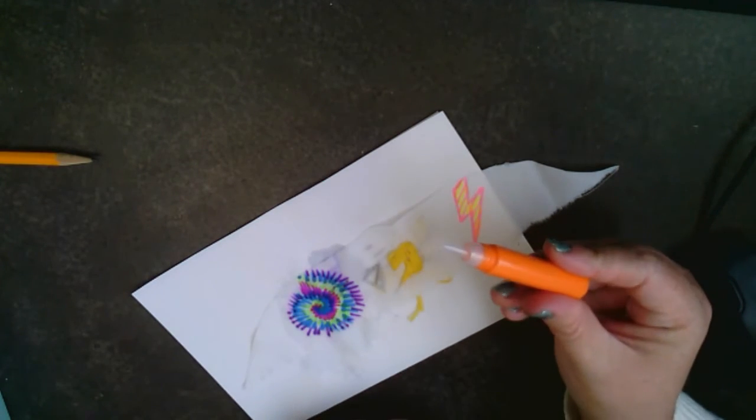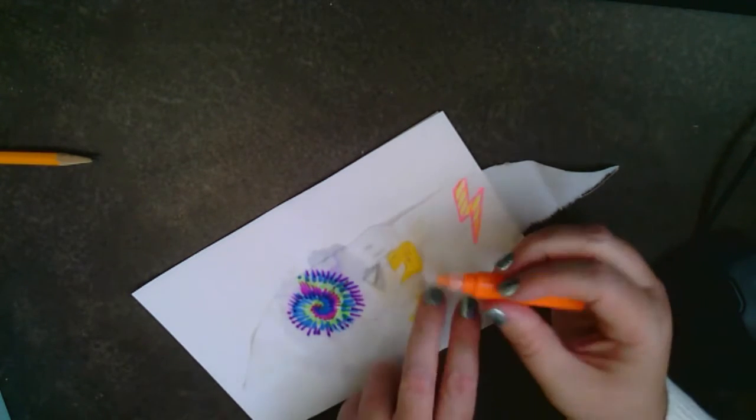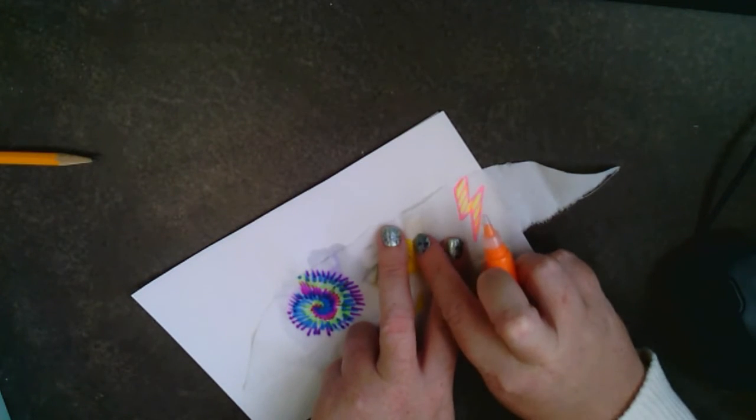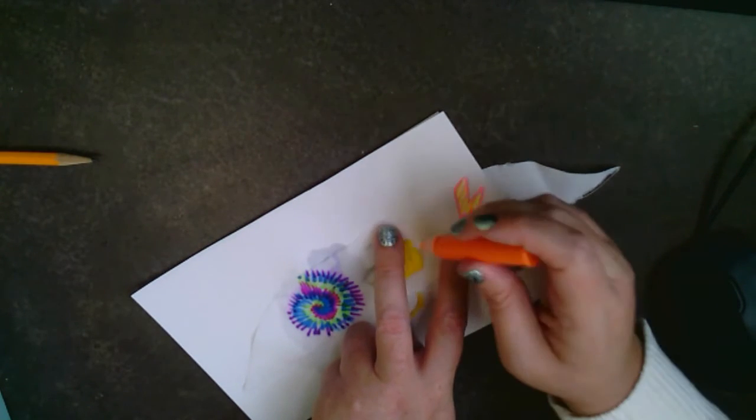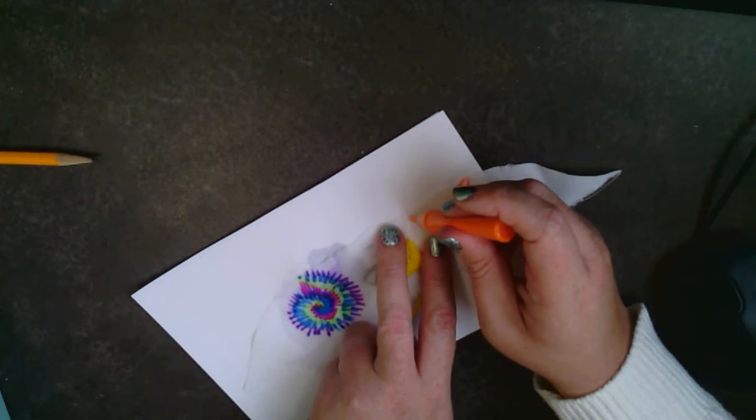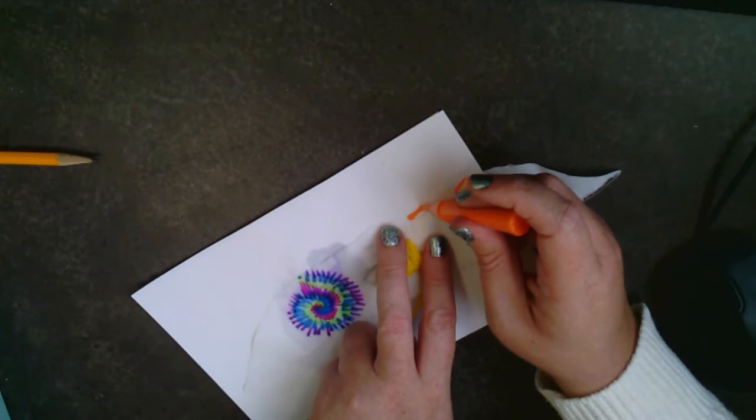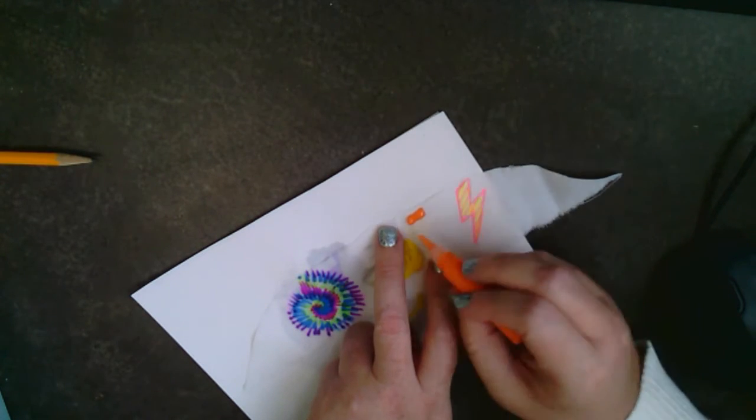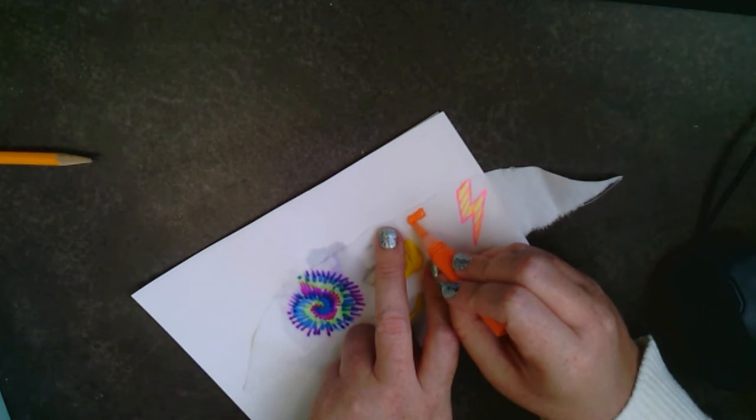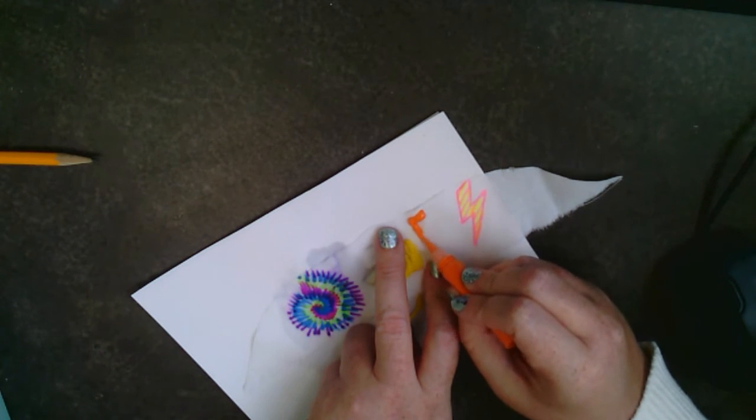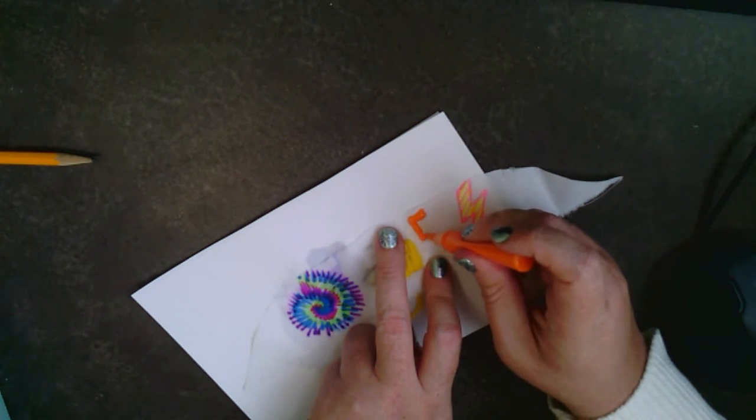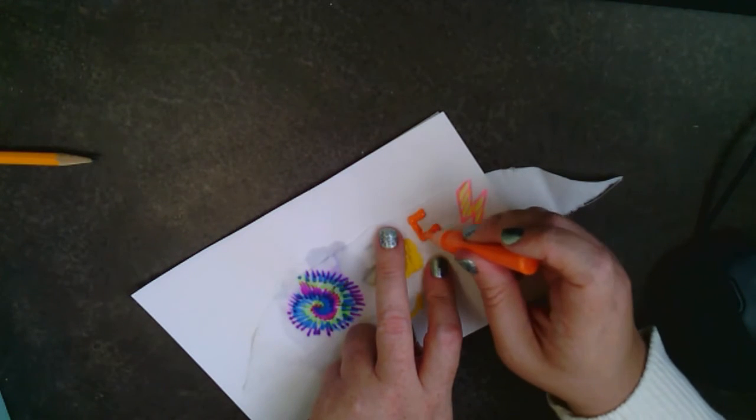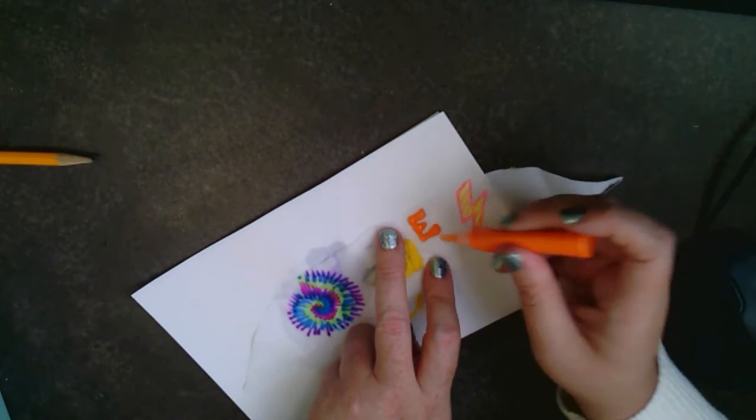So these are all new, so you'll just open them up. And then just draw. Again, I drew it with a pencil first. You probably can't see it but there's an E here. I'm going to take my puffy paint and drag it. You don't need a ton.